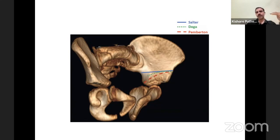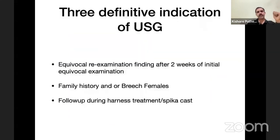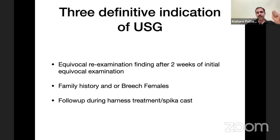Three acetabular osteotomies are performed to reorient the acetabulum: Salter osteotomy, Dega osteotomy, and Pemberton osteotomy. The definitive indications for doing ultrasound are: equivocal re-examination finding after two weeks of initial trial, equivocal examination with family history and/or breech in females, and follow-up during harness treatment or hip spica cast.